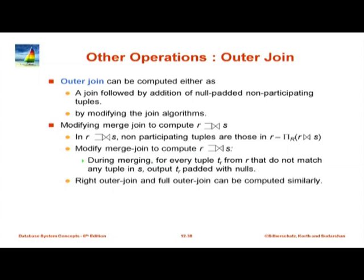For hash join, it is again fairly straightforward for left outer join as long as S is the build relation. We take an R tuple, probe the build relation, and if there is a match we output it. If there is no match at all for that R tuple, we output it padded with null. If the build relation is R instead, it is still possible but a little more complicated — I will skip those details.